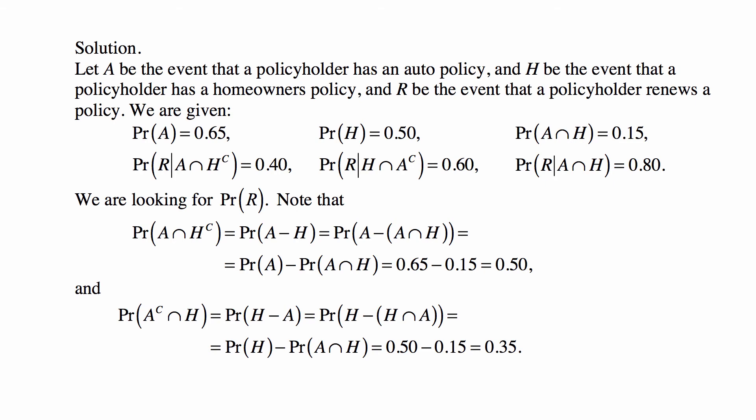Now H ∩ A is inside of H, so that's equal to Pr(H) - Pr(A ∩ H). Again, we plug in the numbers and we get 0.35.